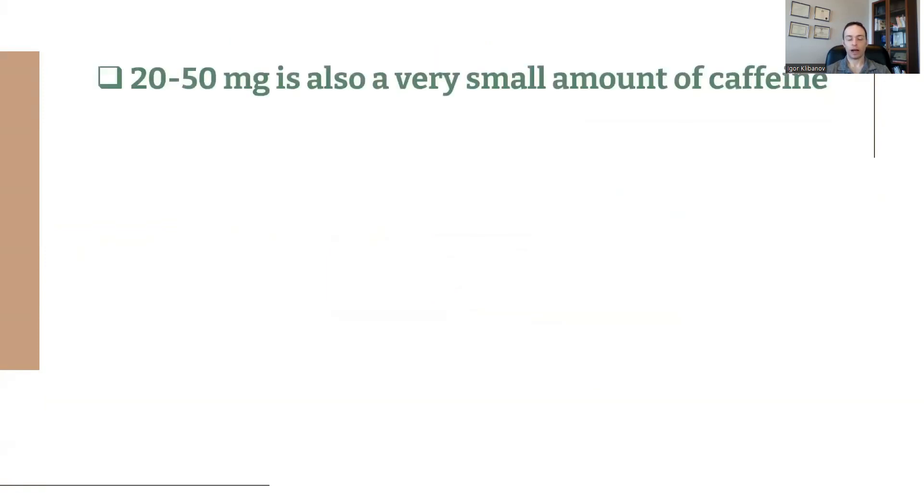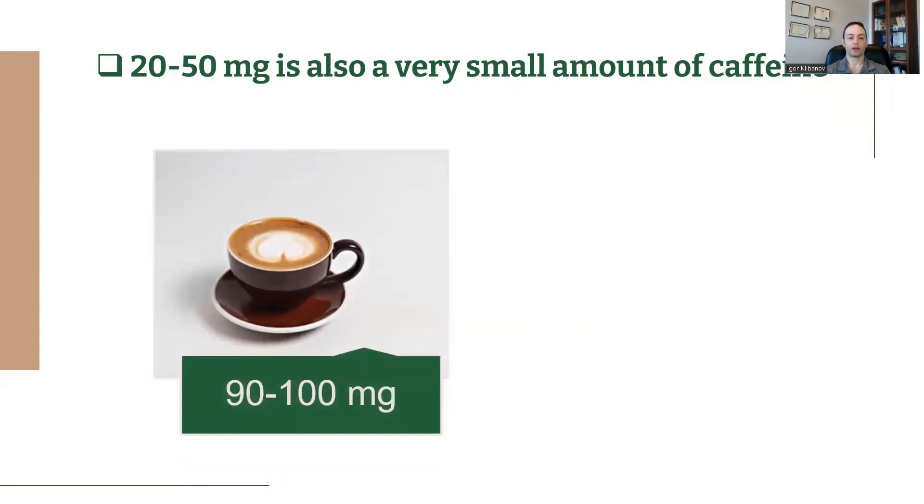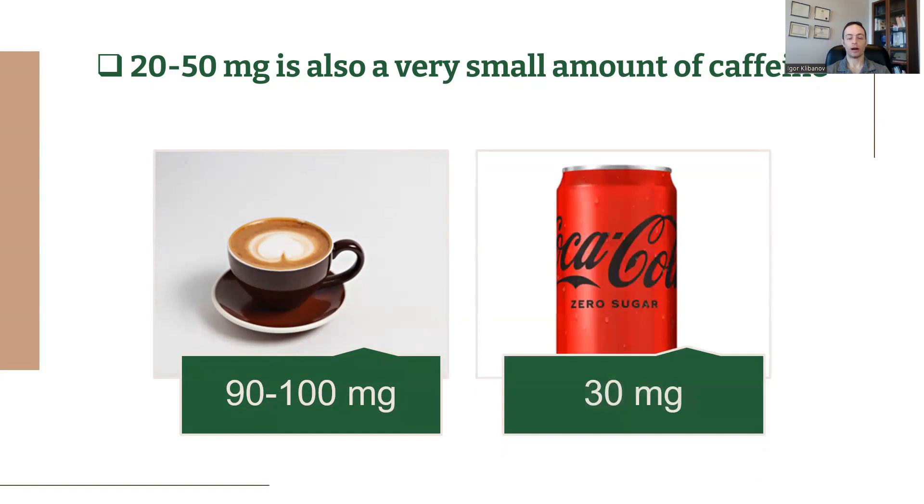So how much is 20 to 50 milligrams really? What does that mean? It's actually a very, very small amount of caffeine. In a cup of coffee, there are between 90 and 100 milligrams. In a can of Diet Coke or Coke Zero, there are about 30 milligrams. In a can of an energy drink, it's usually between 100 and 300 milligrams. So 20 to 50 milligrams is a very, very small amount of caffeine in green coffee bean extract.